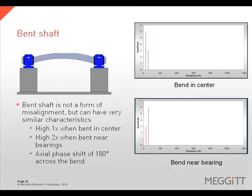A bent shaft can exhibit either a high 1 times or a high 2 times depending on the location of the bend relative to the support structure. If the bend is close to one of the supports or bearings, 2 times vibration will likely be dominant. If the bend is farther away or centered between supports, 1 times rotational speed will likely be predominant. With misalignment the phase shift occurs across the coupling, while with a bent shaft the phase shift occurs across the bent portion, with a 180 degree phase shift expected in the axial direction.